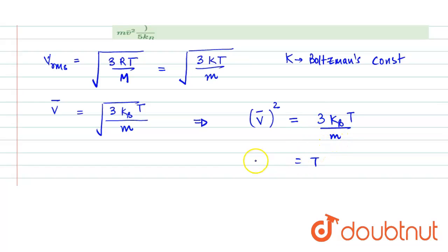So V square is equals to 3KbT by M. So the T value will become MV square divided by 3 times Kb. Right, so this would be the temperature.